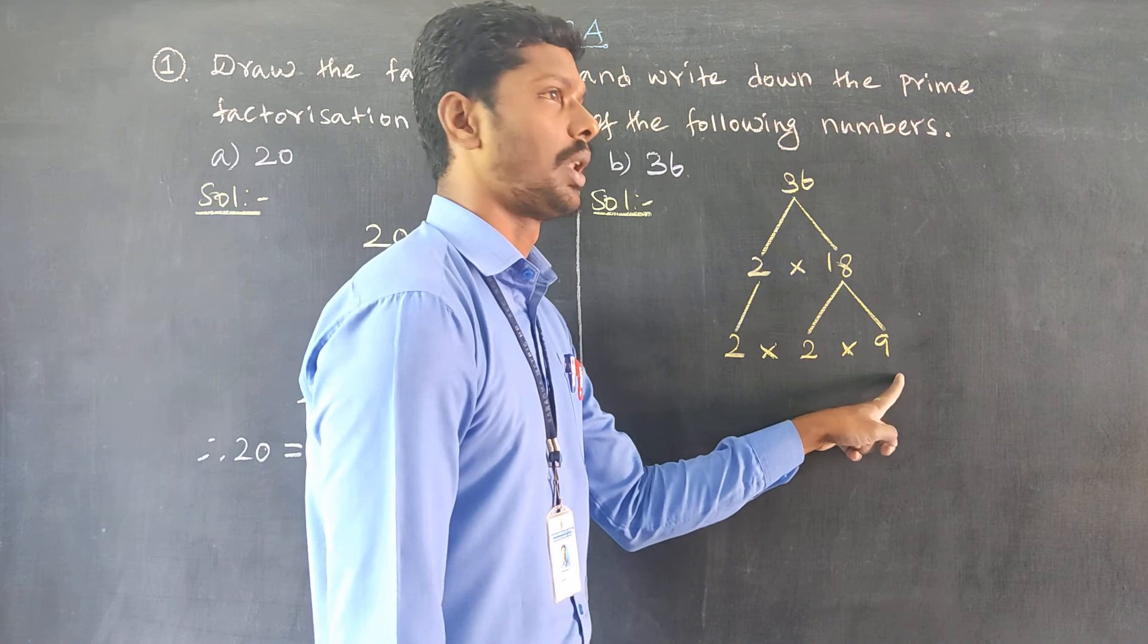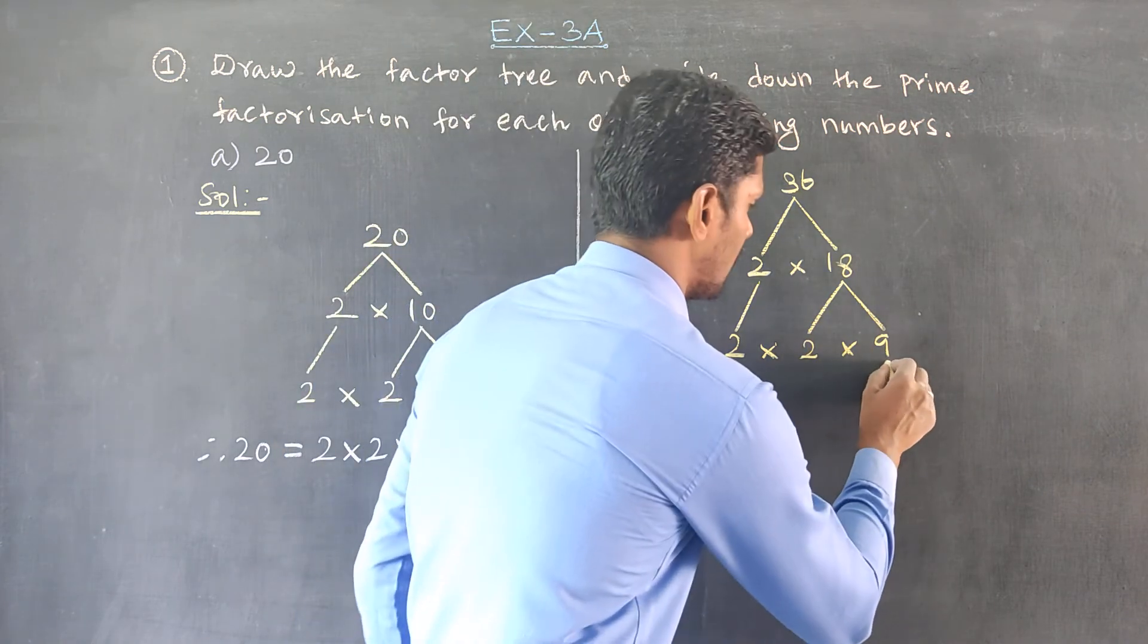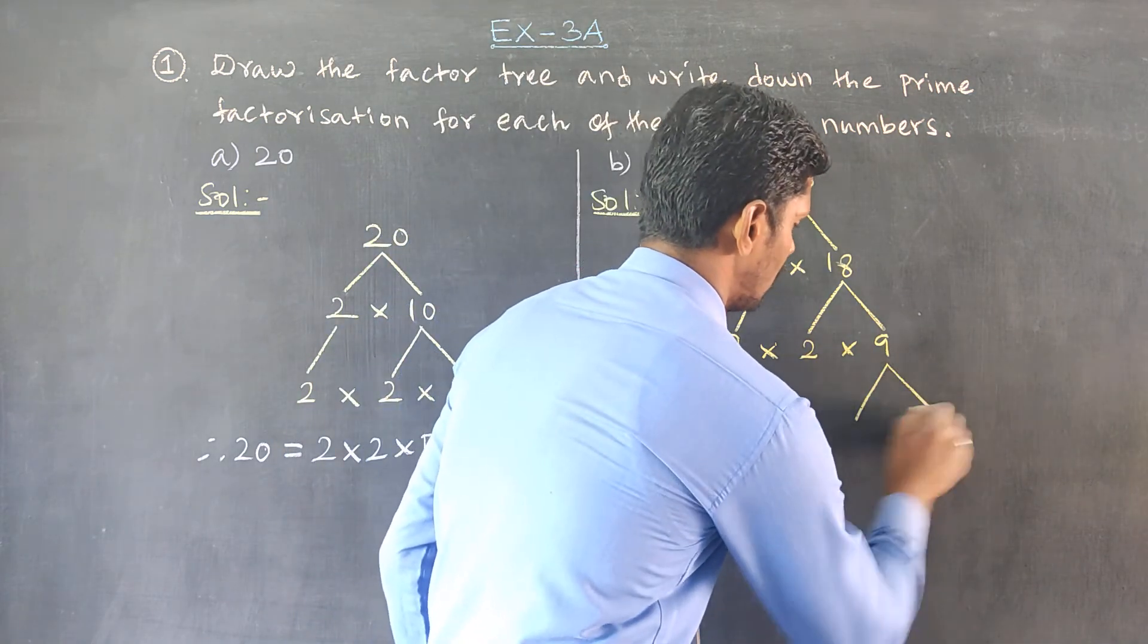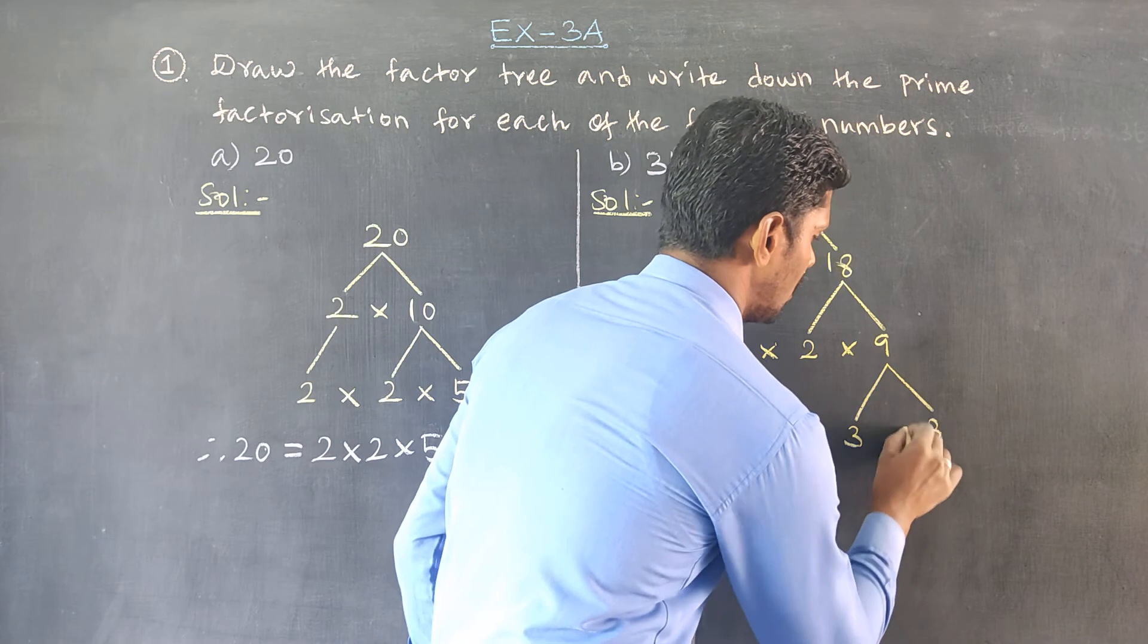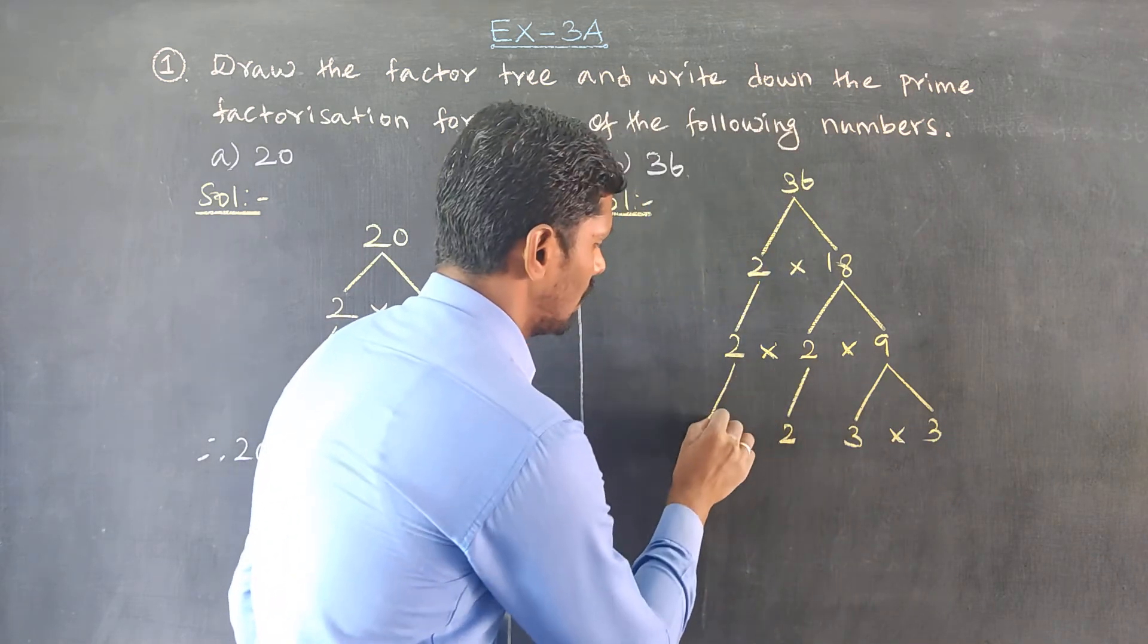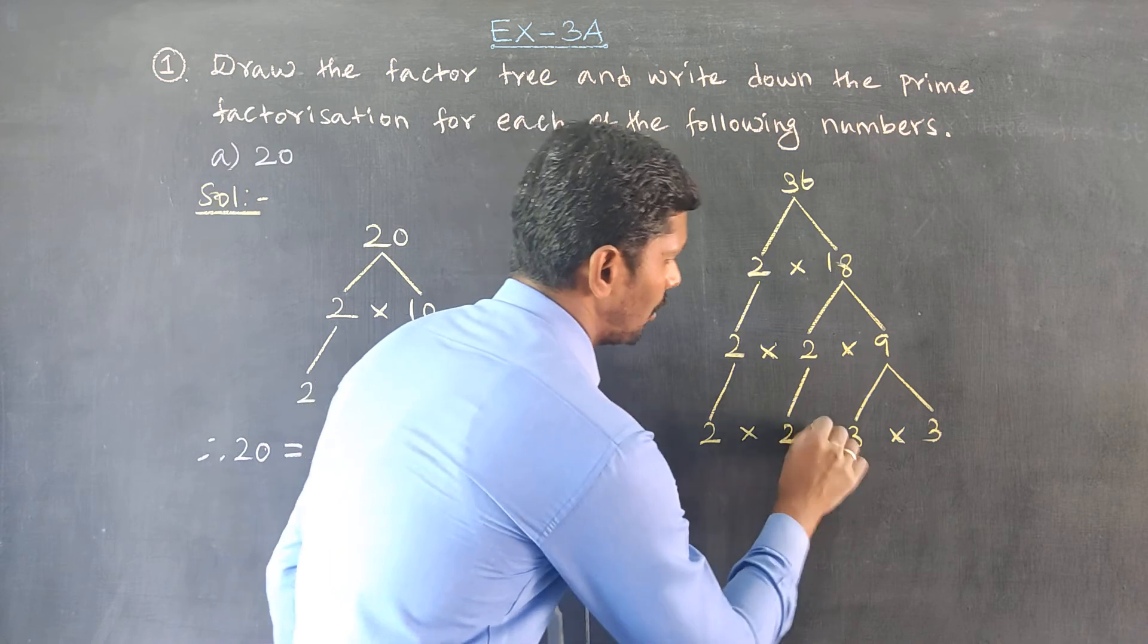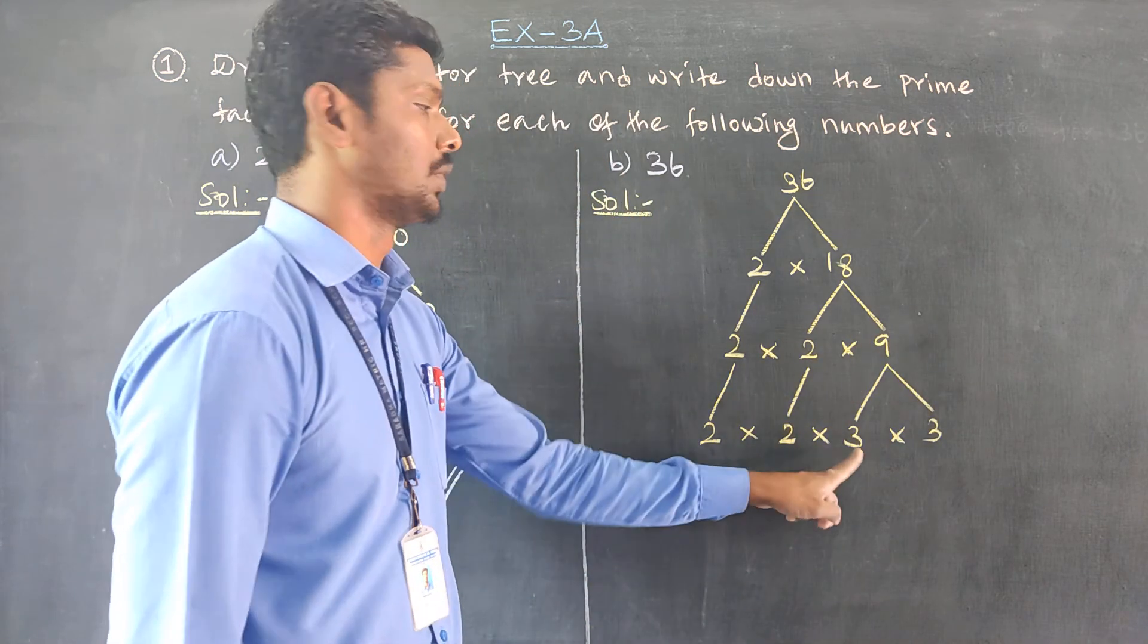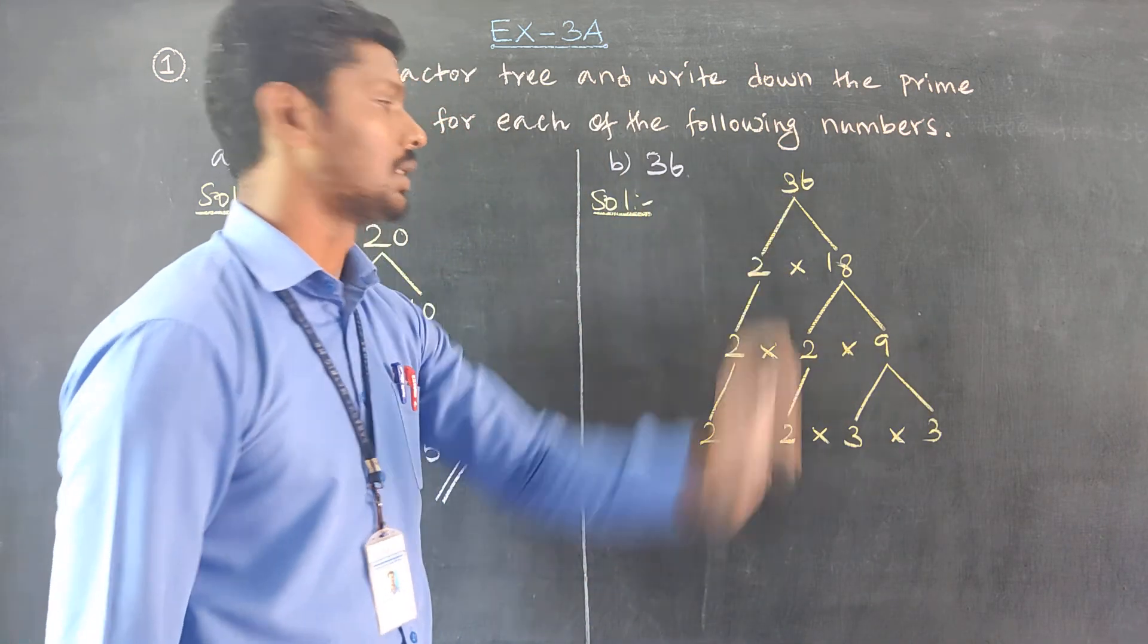Now take 3. 3 times 3 equals 9. The number of multiples are 4: 2 times 2 times 3 times 3 equals 36.